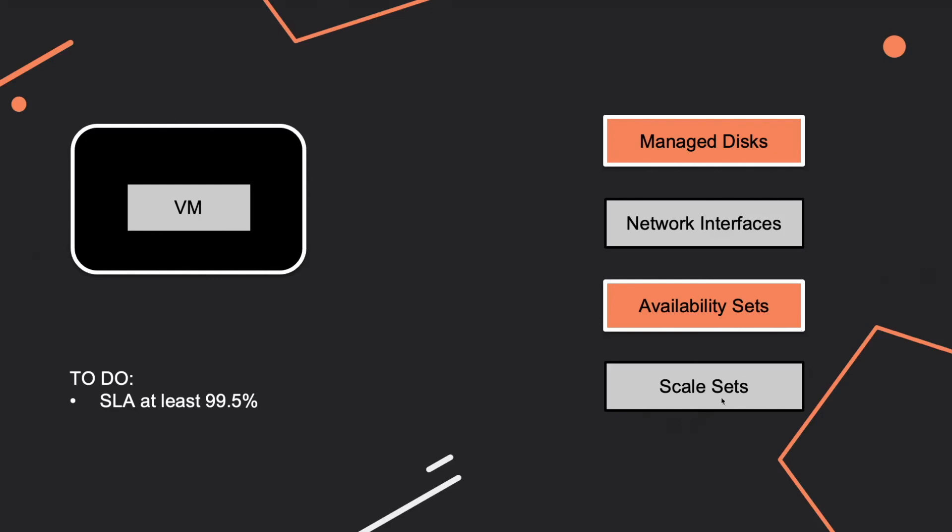Scale sets are incorrect for SLA because they are used to scale your application. This information can be useful for another question - scale sets can be used for high availability, but not specifically for the SLA guarantee.